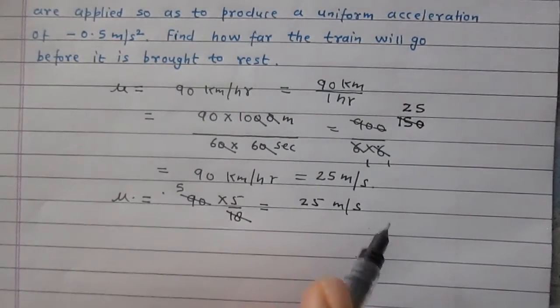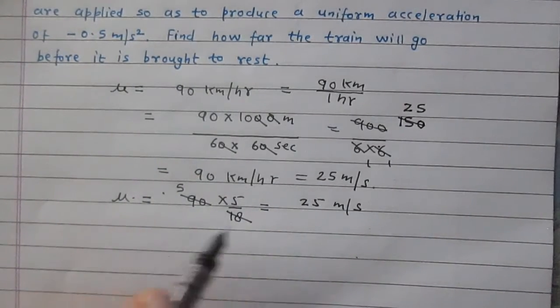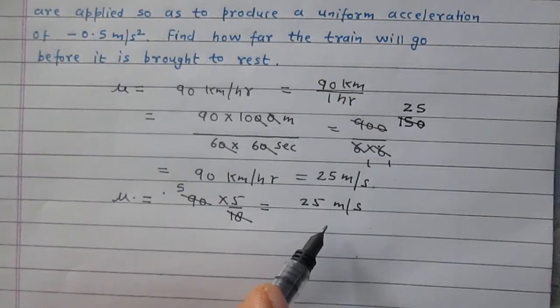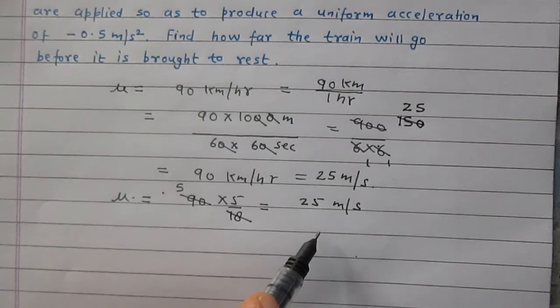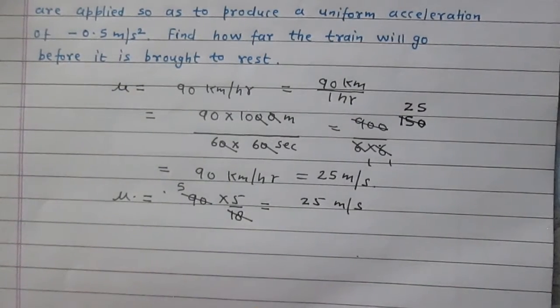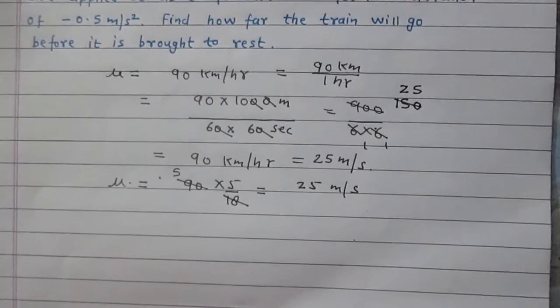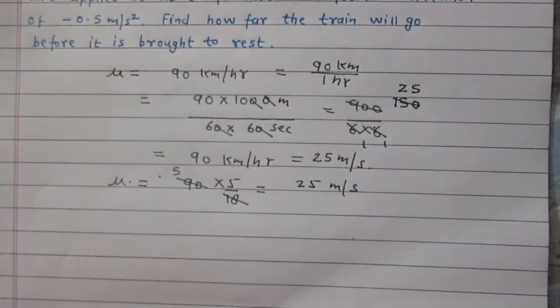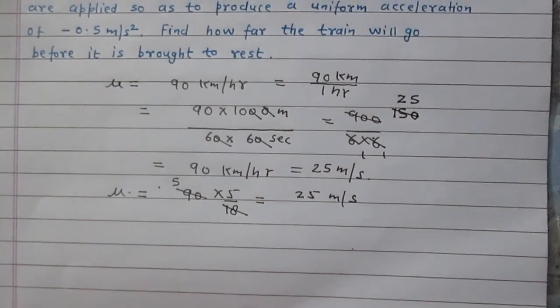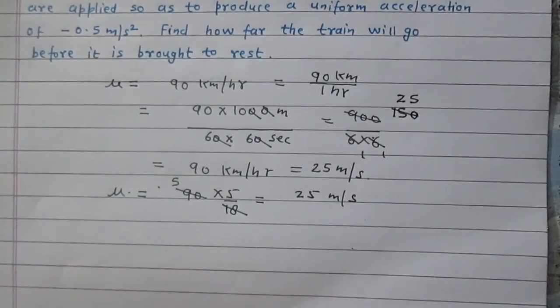We know that 18 fives are 90, so it is simply 25 meter per second. So there are two methods, a long method and a shortcut method. In the shortcut method you will multiply the velocity in kilometer per hour with 5 by 18 and you will get velocity in meter per second. So the initial velocity of the train is 25 meter per second.